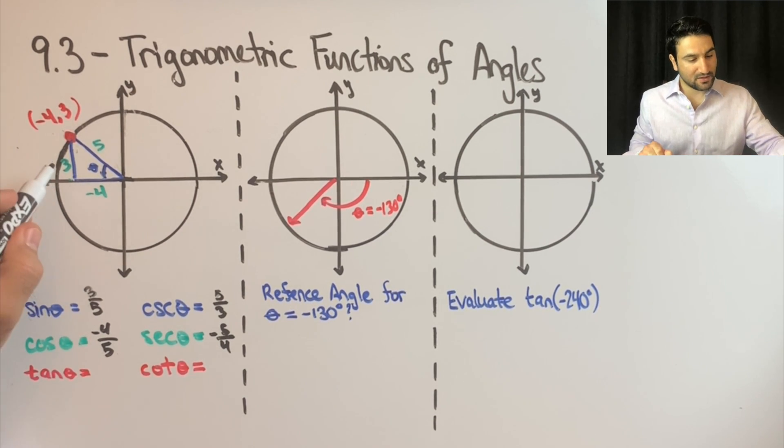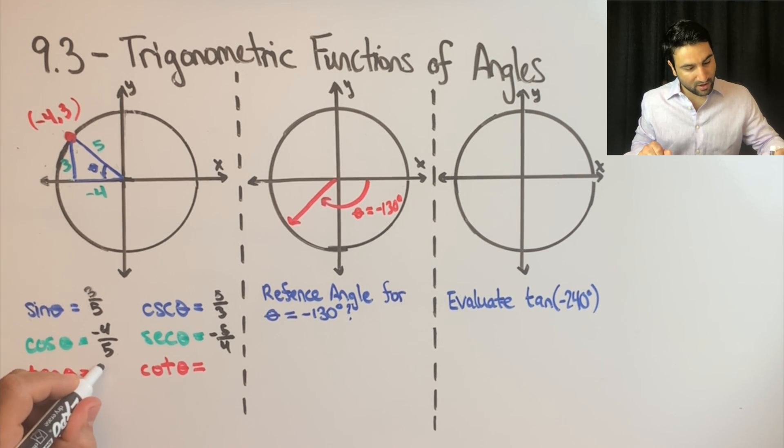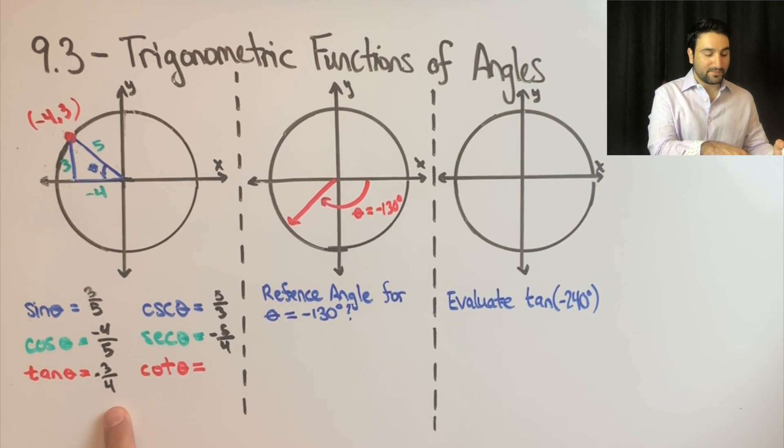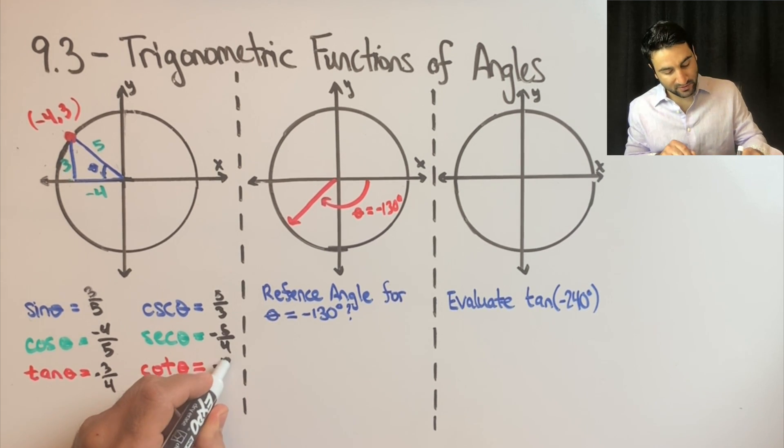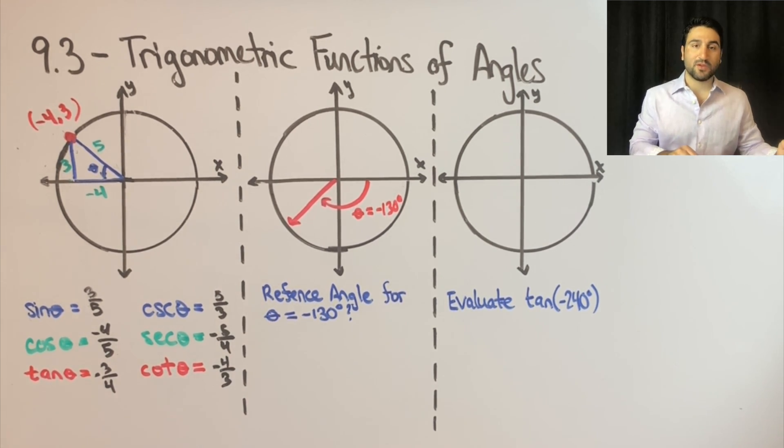Tangent theta is TOA, opposite over adjacent. So you have opposite over adjacent. And then cotangent is the reciprocal of that, so you will have adjacent over opposite.